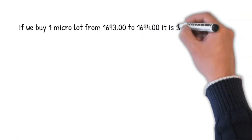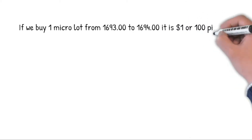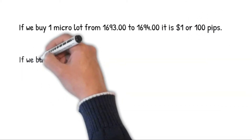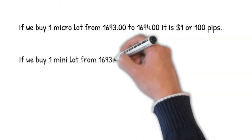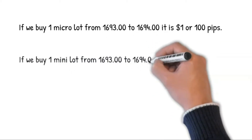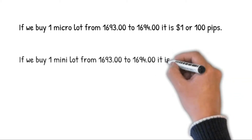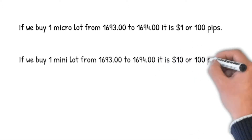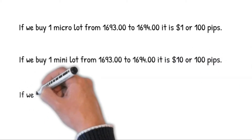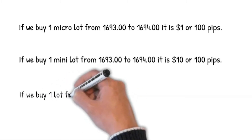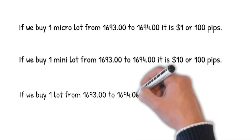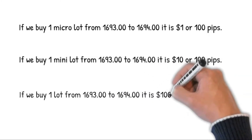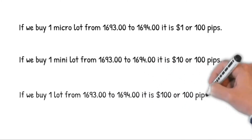If you buy one mini lot from $1,693 to $1,694, it is $10 or 100 pips. So it is very easy to calculate. Just remember this easy way to think: one micro lot trading size, 100 pips target is $1.